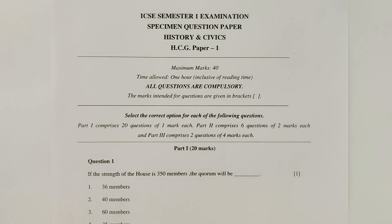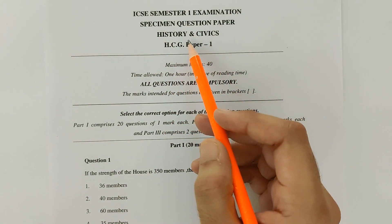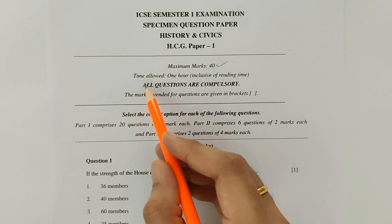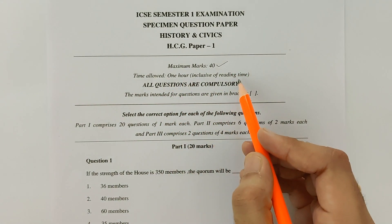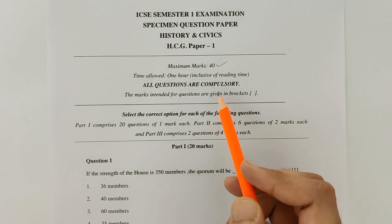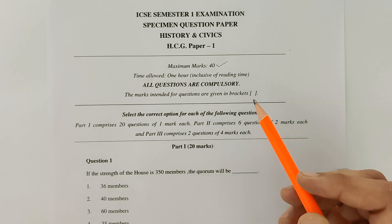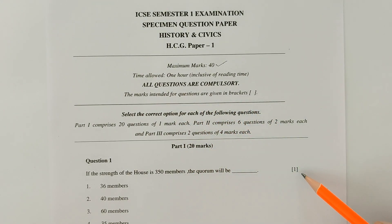Without further ado, let's begin. Over here I have the ICSC Semester 1 examination specimen question paper for History and Civics. Let's go through the instructions. The maximum marks is 40. The time allowed is 1 hour, and this 1 hour includes the reading time — meaning within 1 hour you will have to read the entire paper and solve it. All the questions are compulsory, and the marks allotted for each question are given in brackets.